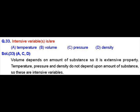We are going to discuss question number 3, MSQ from the IIT JM examination 2017. In this question we have to mark the intensive variables — those variables which do not depend upon the amount of substance. Starting with A, that is temperature. We know that the temperature of a substance is independent of its amount, so it is an intensive property.